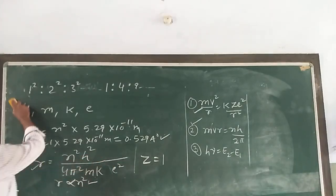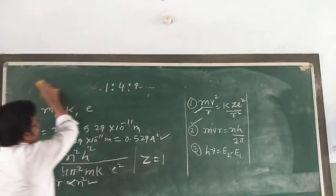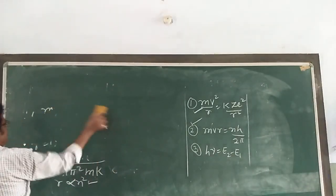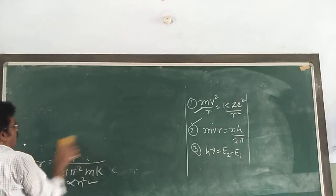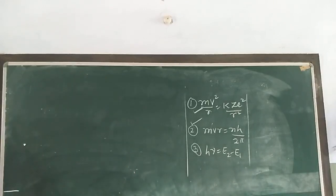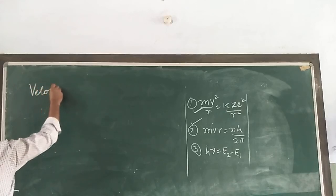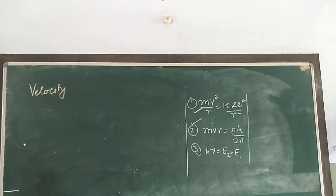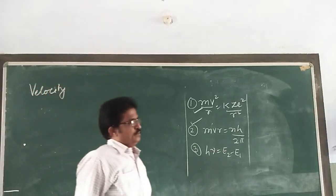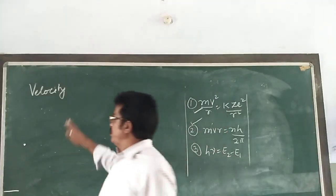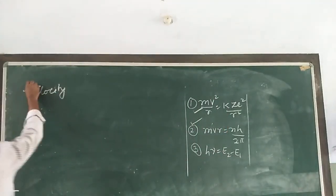Now we are going to find out the velocity of electrons in Bohr's stationary orbit. This is the second quantity we want to derive using the assumptions.